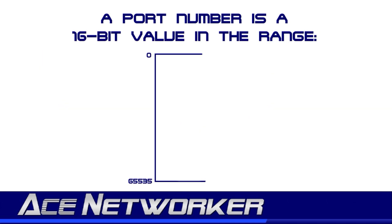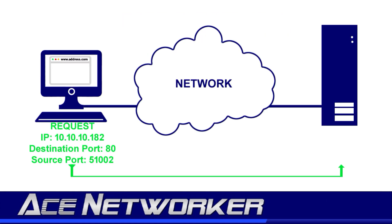A port number is a 16-bit value between 0 and 65,535. Within that range, the well-known port numbers run from 0 through 1023, reserved for specific TCP/IP applications. Port 0 falls within this range but is never actually used by TCP or UDP. There are destination and source port numbers used in networking — the client always uses a destination port number to send out a request.